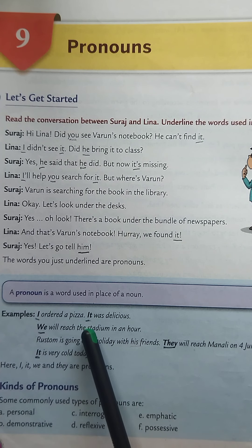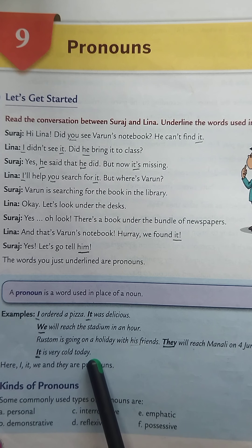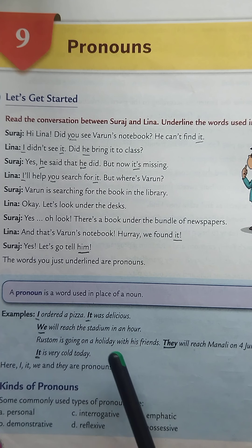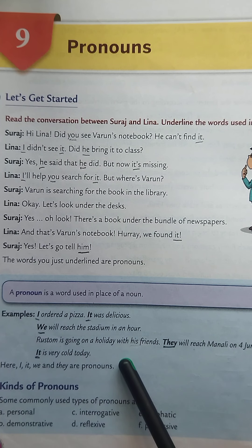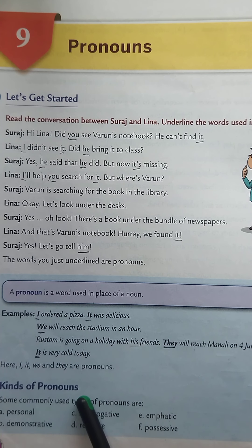Examples: I ordered a pizza, it was delicious. We will reach the stadium in an hour. Rustam is going on a holiday with his friends. They will reach Manali on 4th June. It is very cold today. Here, in these sentences, I, we, they, and it are called pronouns because they are used in place of nouns.